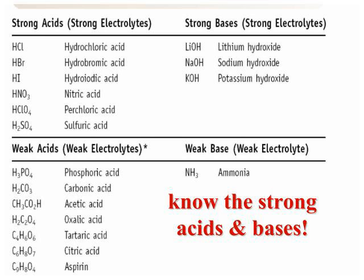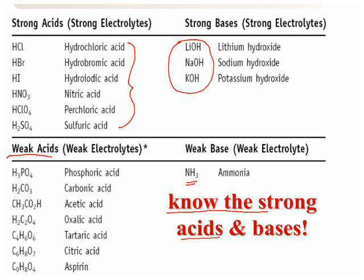Make sure that you're really clear on your strong acids and your strong bases. Once you memorize your strong acids, you don't need to memorize your weak acids — they're the ones that aren't strong. Your common strong bases are your Group 1 hydroxides, and then your common weak base is the ammonia molecule.